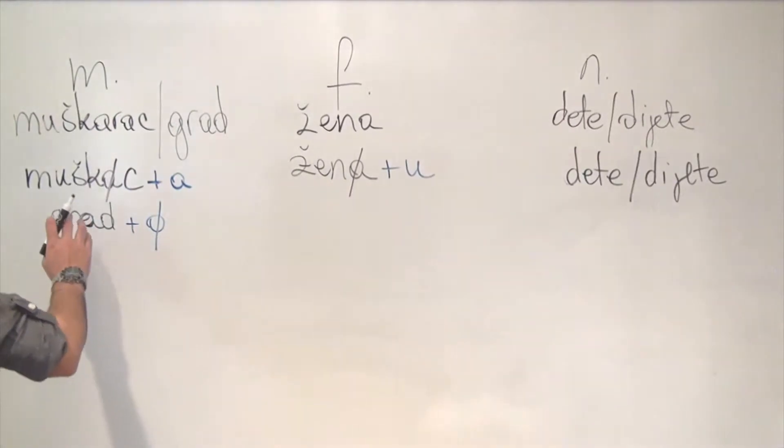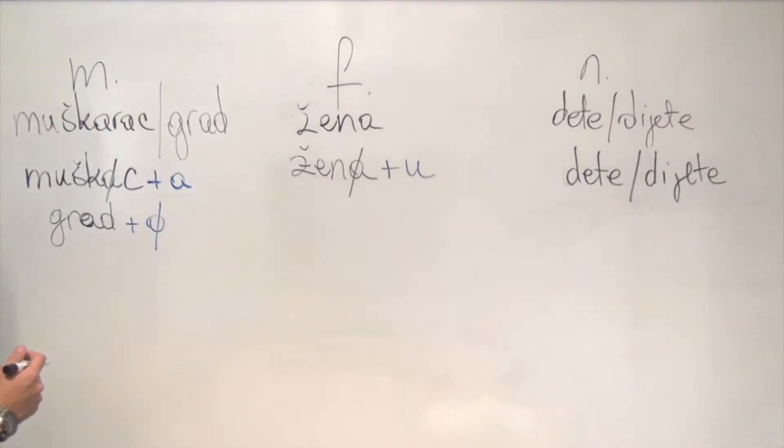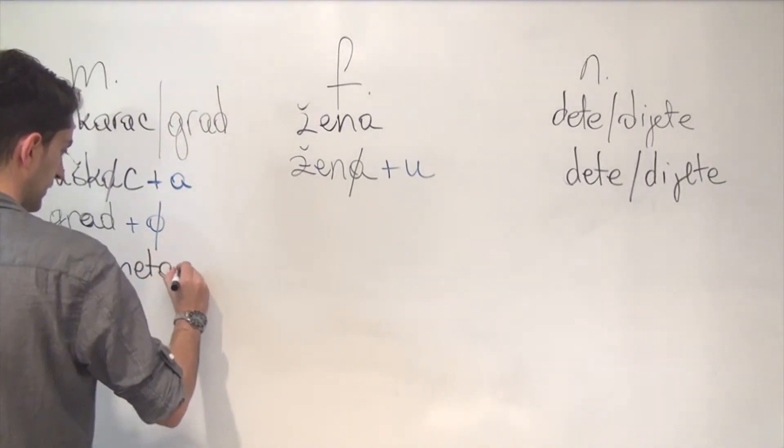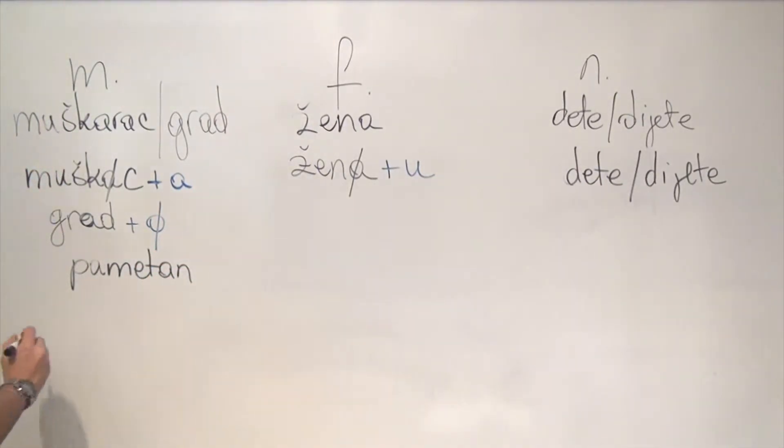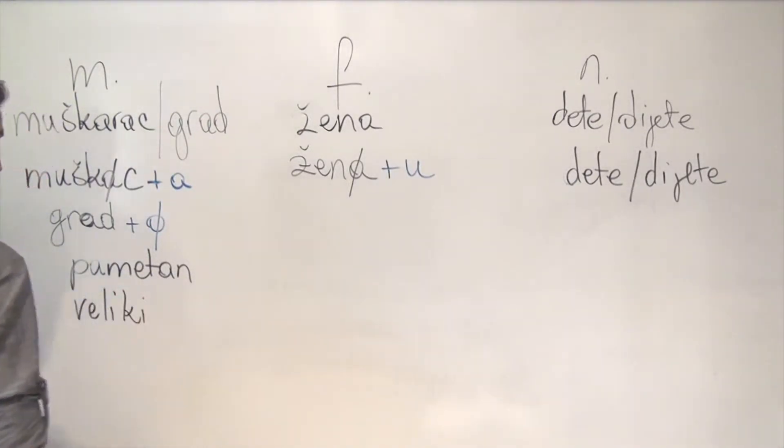So we here have Muzkarac and Grad. Let's use an adjective that can apply to both. Or let's use two different adjectives, that's easier. So let's use the one that we usually use, which is Pametan for Muzkarac, and let's use Veliki for our Grad, for our inanimate noun.